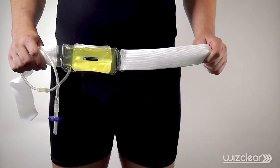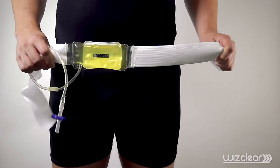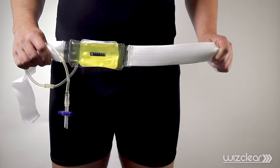Wearing the WizClear: The WizClear is designed to fit securely around your body using elastic straps. We recommend wearing a t-shirt under your WizClear to prevent the hand warmer from coming in direct contact with your skin.